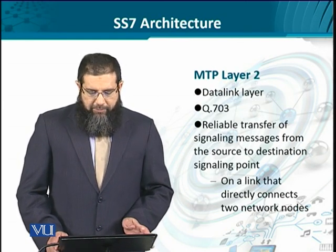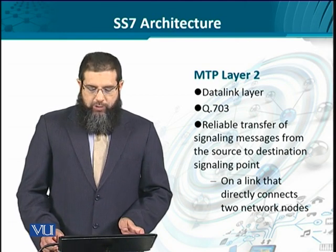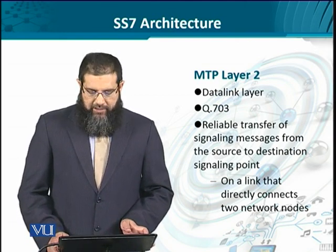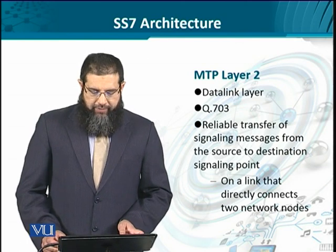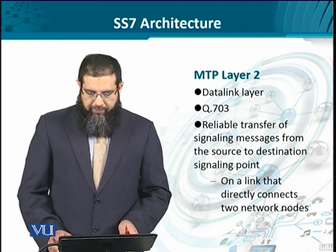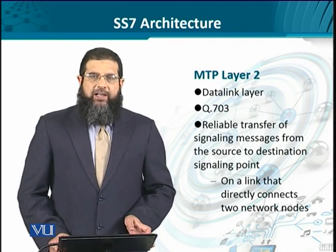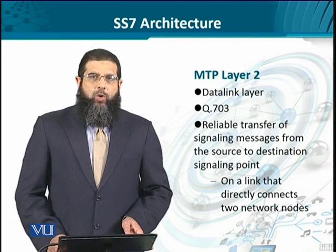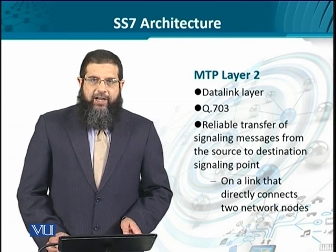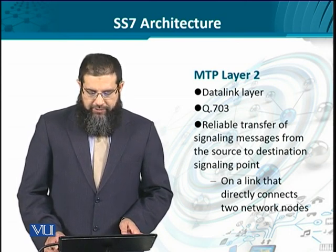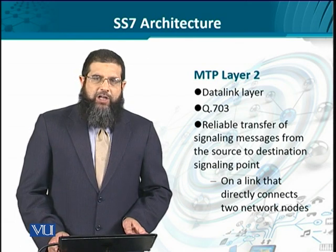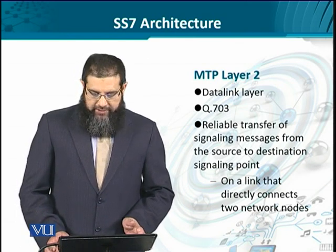MTP layer 2 belongs to the data link layer and is defined in ITU-T recommendation Q.703. Similar to the data link layer, it concerns itself only with the link level. It defines reliable transfer of signaling messages from the source to the destination, which are the two endpoints on a single link.